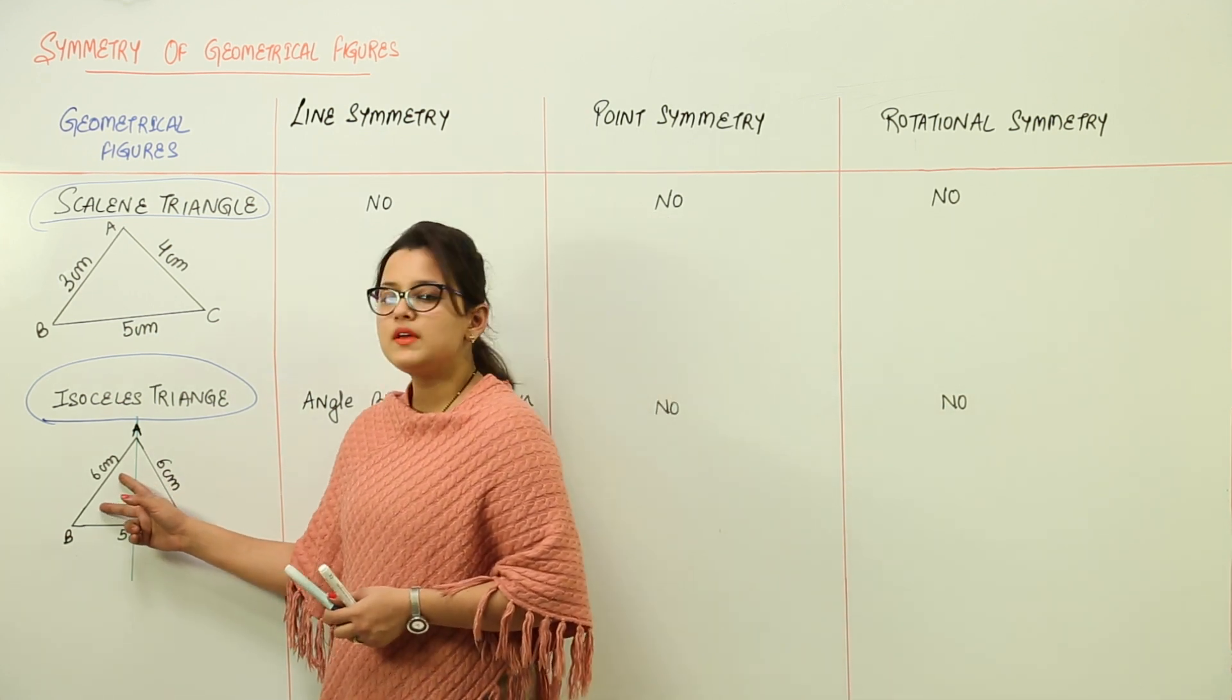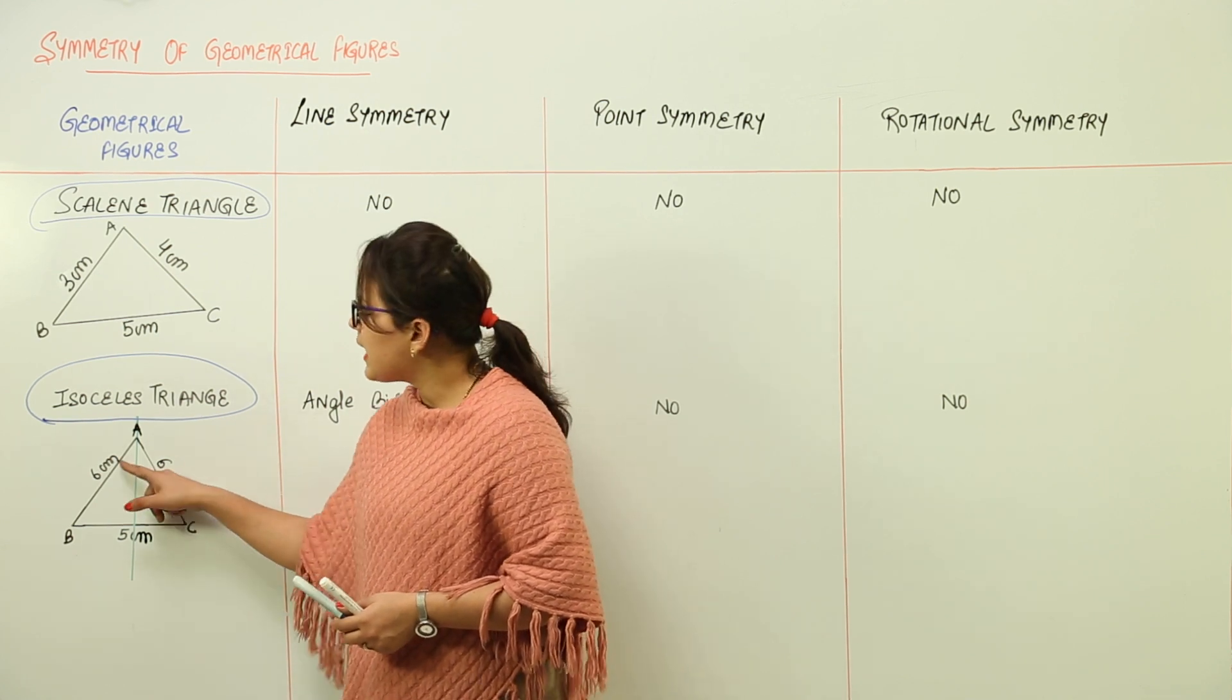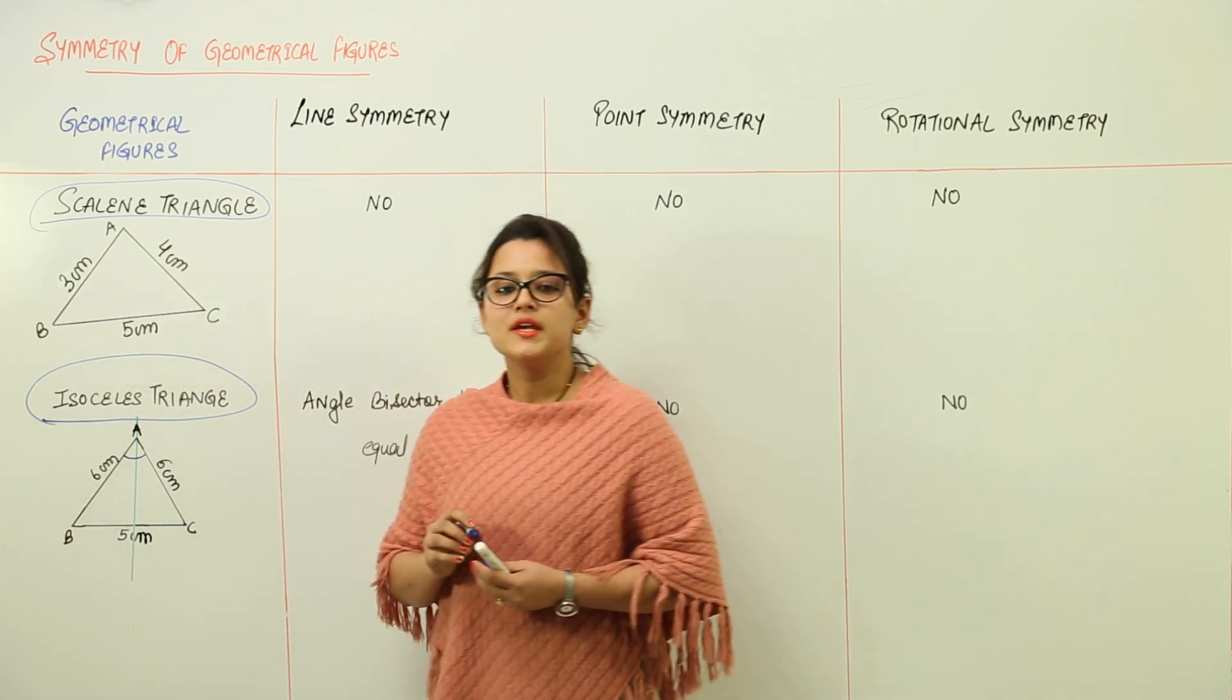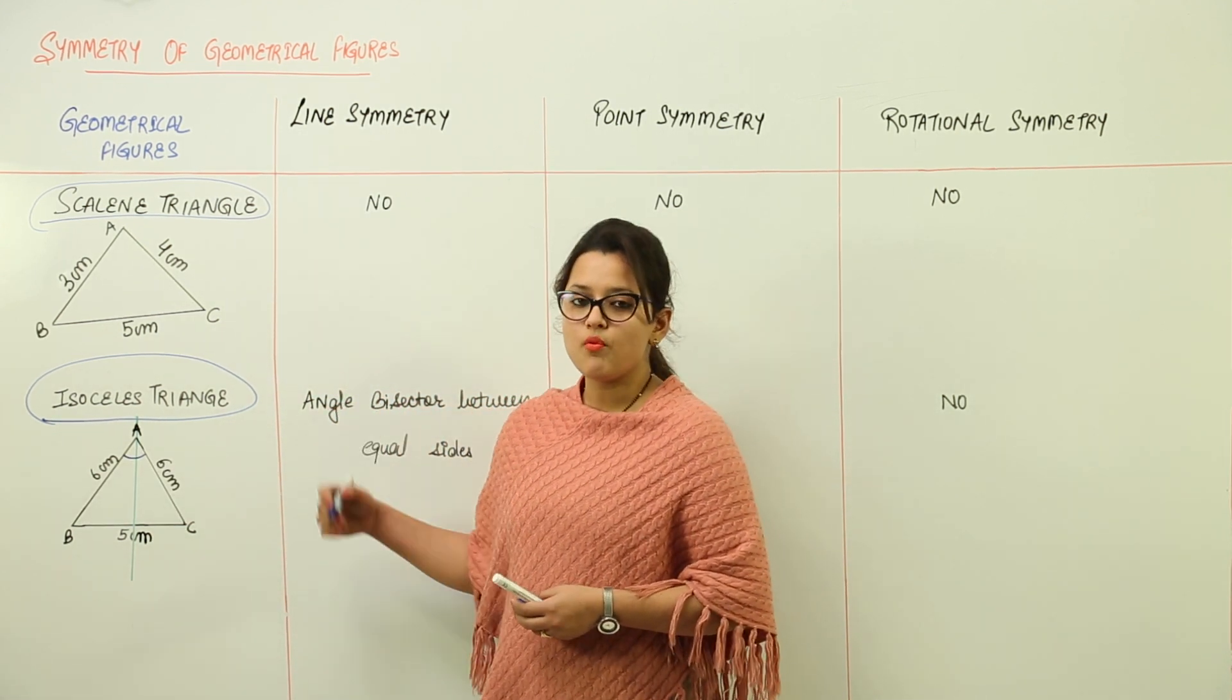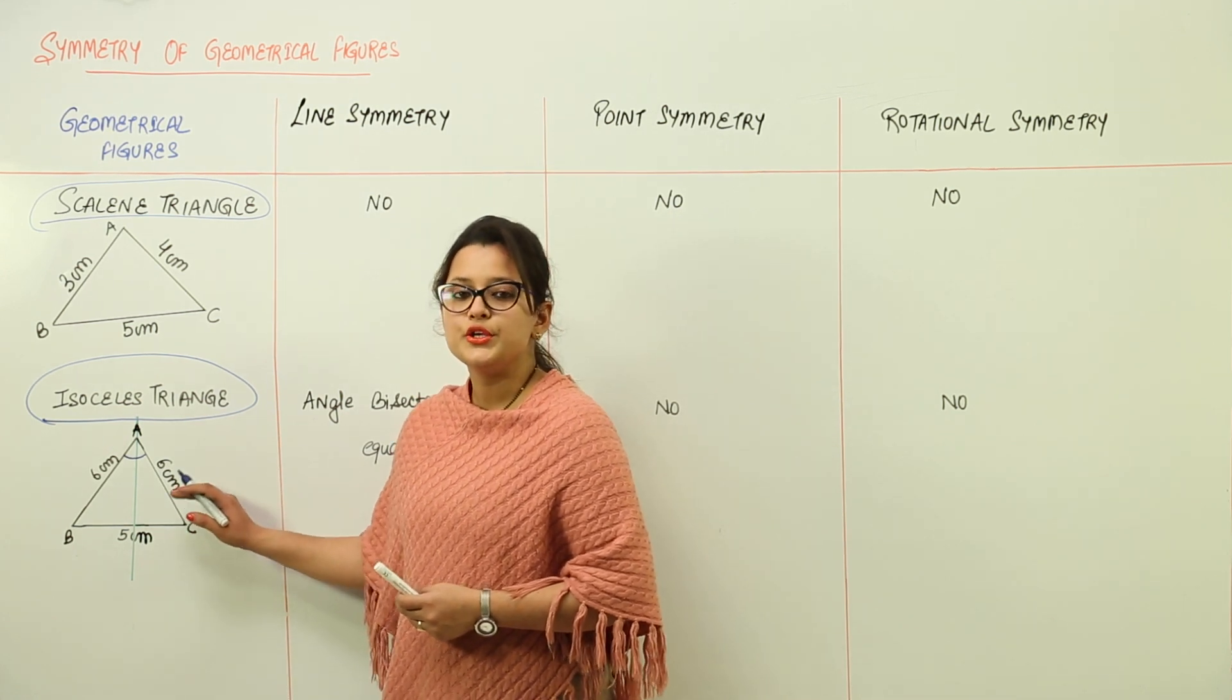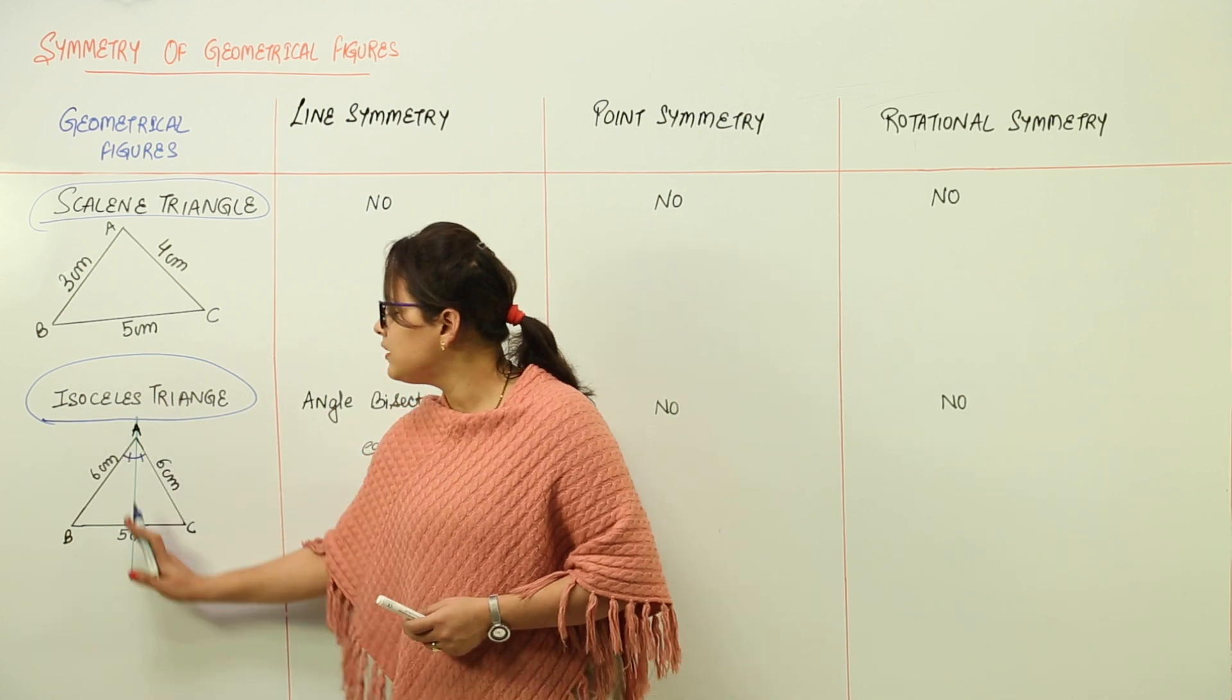Now over here we have AB and AC as the two equal sides for this triangle. The angle between the two equal sides is this angle. If you want to make the line symmetry for this isosceles triangle, you have to bisect this angle. Bisect means you divide it into half.